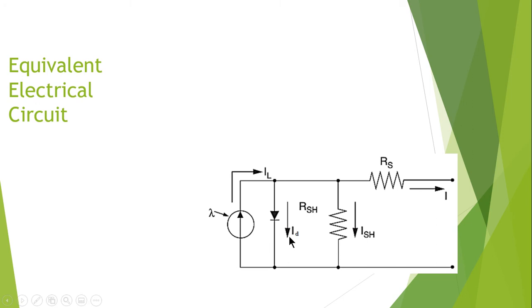ID is the diode current and RSH is the shunt resistance connected in parallel with this current source, whereas ISH is the shunt current that will be leaking through this shunt resistance towards the ground. RS is the series resistance connected in series with this overall source.